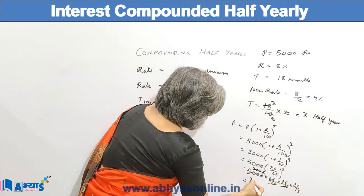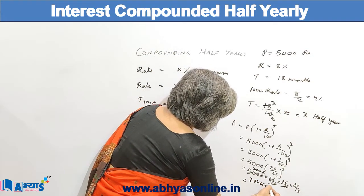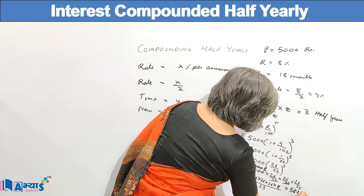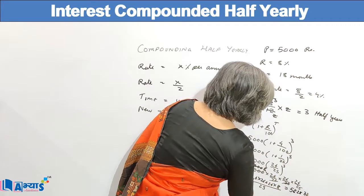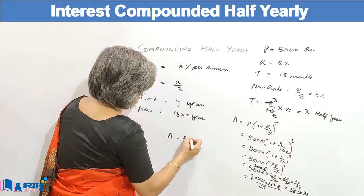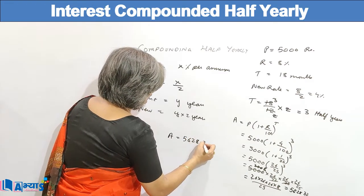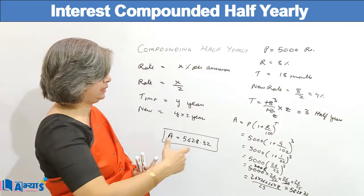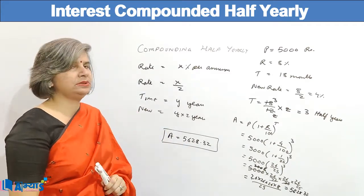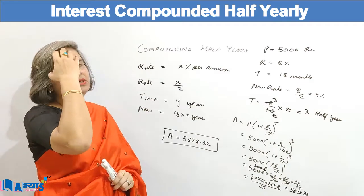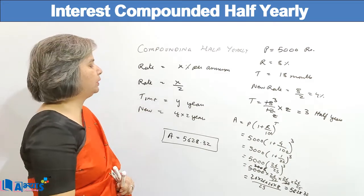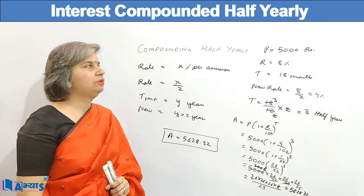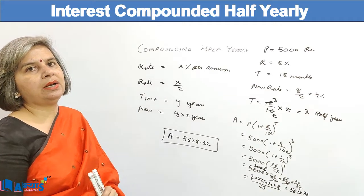The answer is 26 × 26 × 26 × 8 divided by 25, which equals 5628.32. So the amount is equal to 5628.32 rupees. This is how we perform the calculations when compounding half yearly.